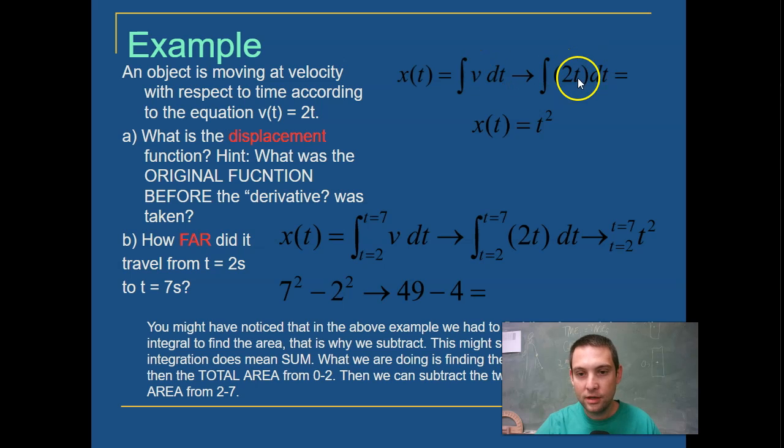So plugging in our velocity as 2t, 2t dt, this dt here just tells us that variable, the t, is what we are adding up. That's what we're integrating with respect to. And when we do that, we get t squared. Well, how in the world did we do that?